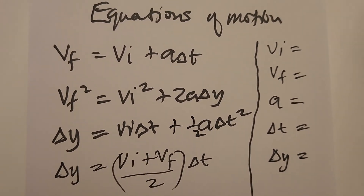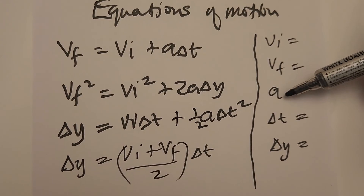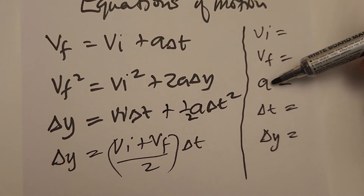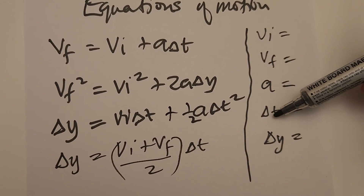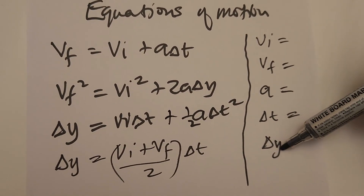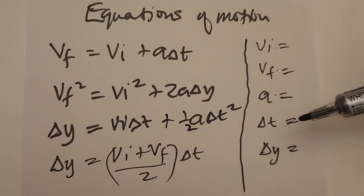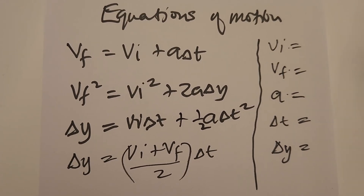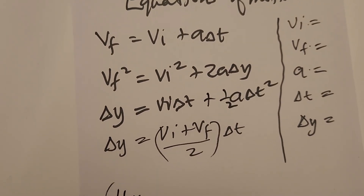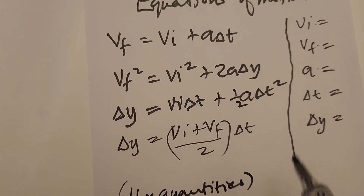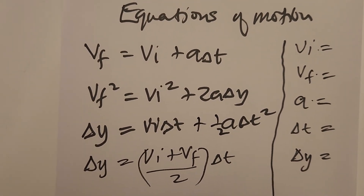Here, vi is initial velocity, vf is final velocity, a is acceleration — which is constant in this case, so it will be either positive or negative 9.8 — Δt is the only scalar quantity, and Δy is displacement. Each equation of motion contains four of the five quantities, so to use any one equation you need to know a minimum of three quantities.